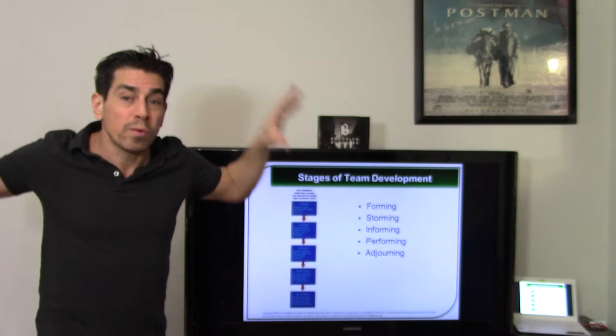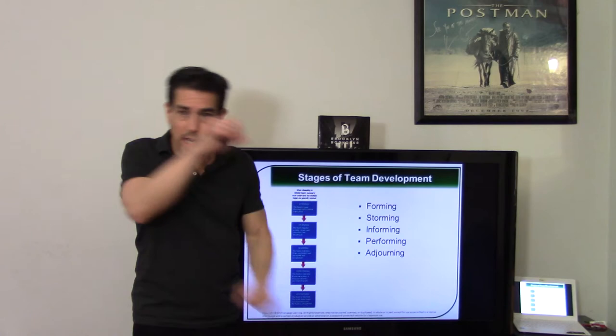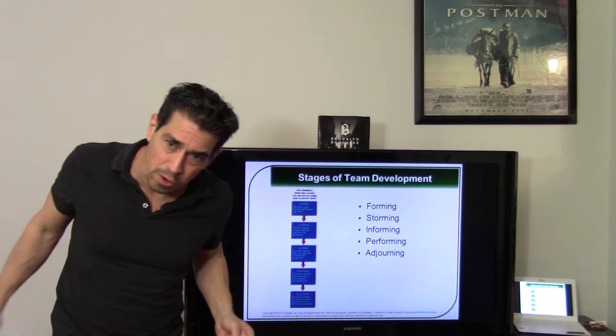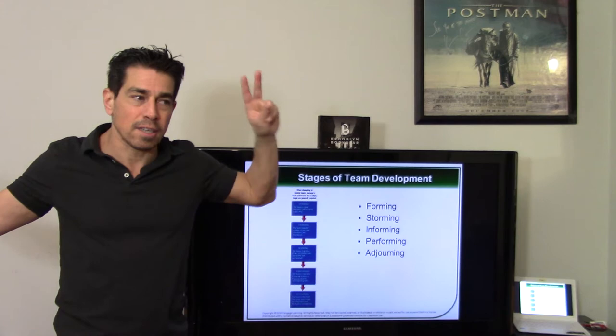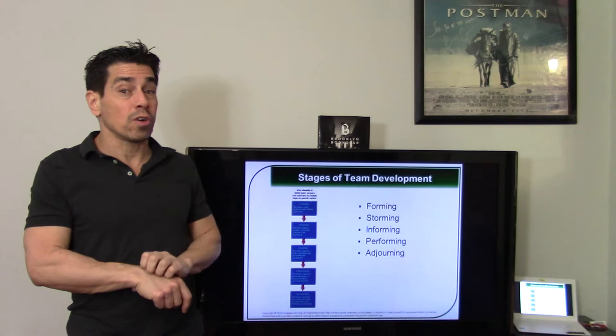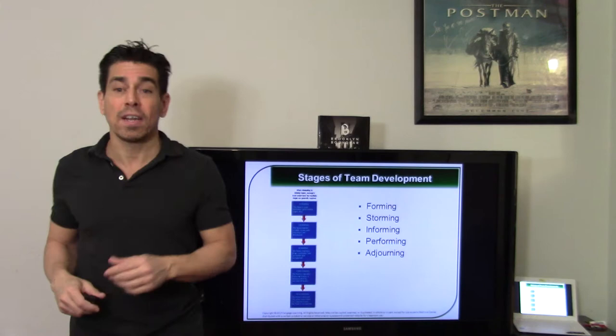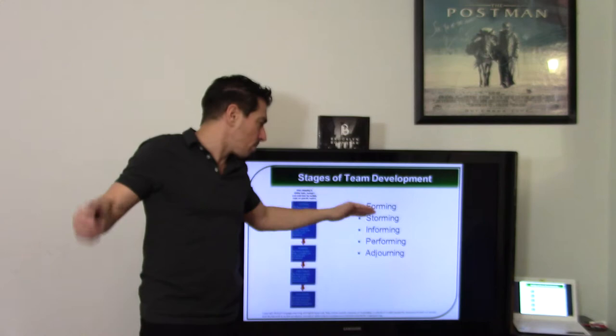So forming. We're coming together. Storming. We're figuring it out. We're beating each other up. Norming. Everything is good. We're ready to work. Performing. Doing a job. Adjourning. We're done. Peace out. Good working with you. Hopefully we'll work again. If it's an effective team, which we're going to talk about in BA 31, if you take that class with me, effective team, you're going to want to work together with them. If not, peace out. I hope I never see you again. Forming. Storming. Norming. Performing. Adjourning.